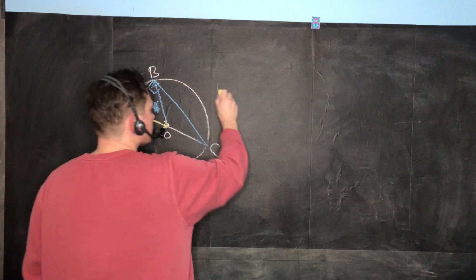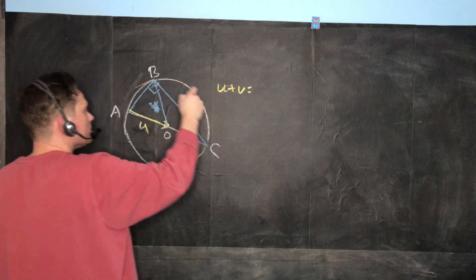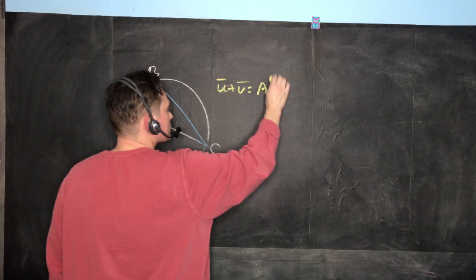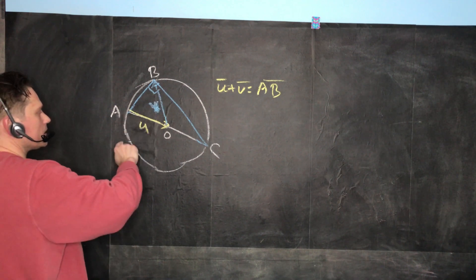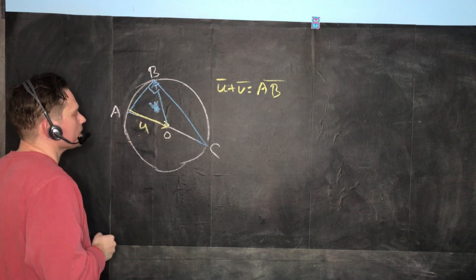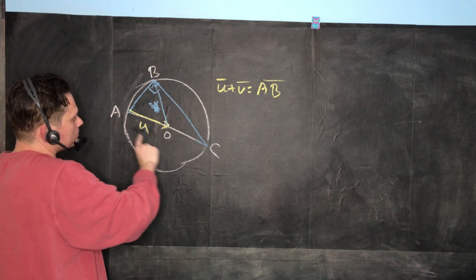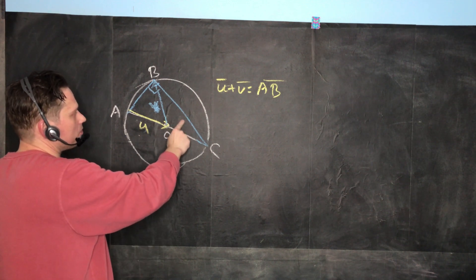When you form U plus V, you're going to have U plus V, that's equal to AB. So that's AB this way. So remember, these are vectors. I'm just going to mark that with little lines like that above them. So that's that vector. Basically add this and this gives you this. Now if you take B and you flip it and you basically place it here and you connect, it's going to give you that vector right there, BC.